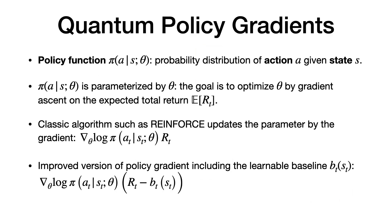Later, other groups developed quantum policy gradient. The policy gradient approach directly learns the policy function — a probability distribution over actions A given state X. The classical REINFORCE algorithm computes the gradient of the expected total return. To improve stability, a learnable baseline is subtracted from the total return, providing a better estimate of how good or bad a particular action under a particular state.